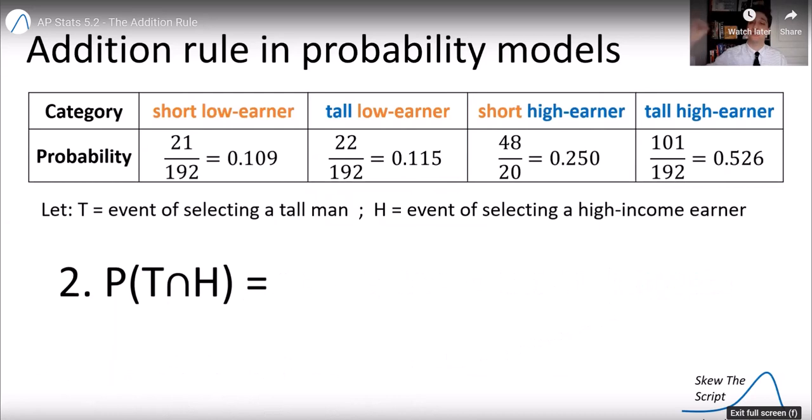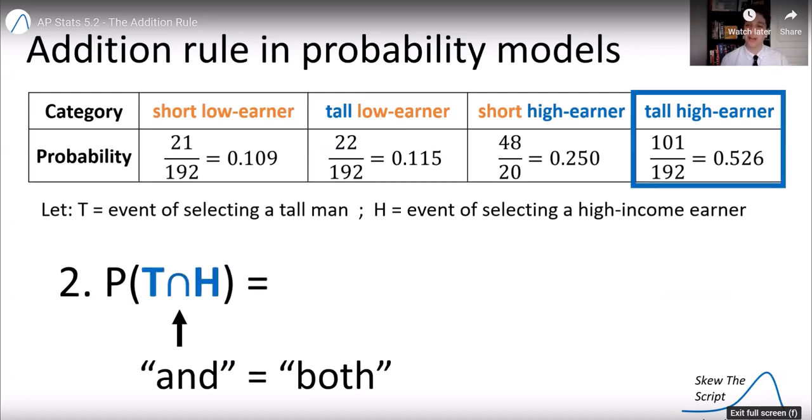Now, let's look at the probability of selecting someone who's tall and a high income earner. Remember, and means both. So we need to find someone who's both tall and a high income earner. That's one category there. 52.6% chance of that.